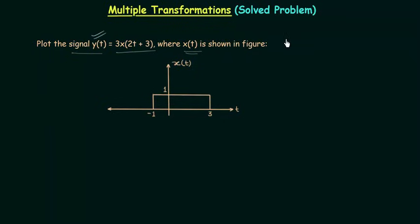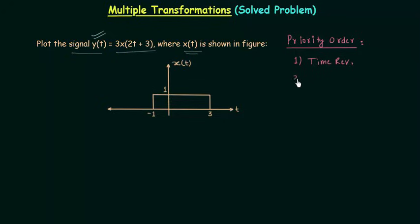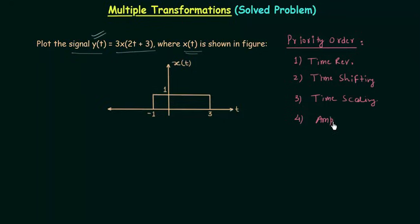If you remember the last presentation, we obtained the priority order for various operations on continuous time signals. The first priority is given to time reversal, so the first thing we have to do is reverse the time. The second priority is given to time shifting. After time reversal we have to shift the time. The third priority is given to time scaling, and we can perform amplitude scaling at any time — I will perform amplitude scaling after time scaling, so amplitude scaling is the last operation.